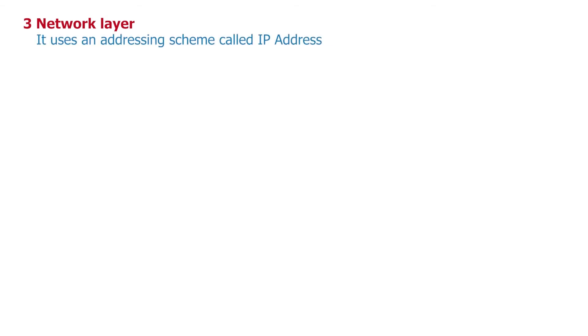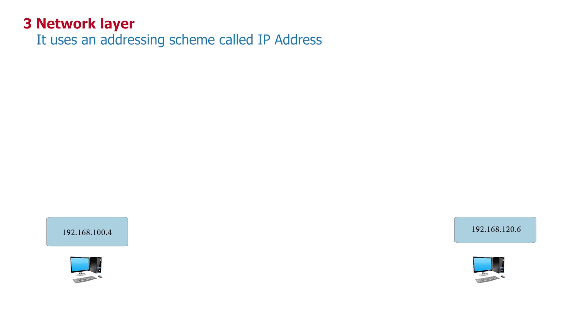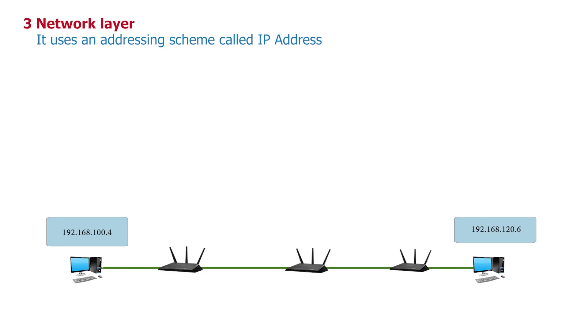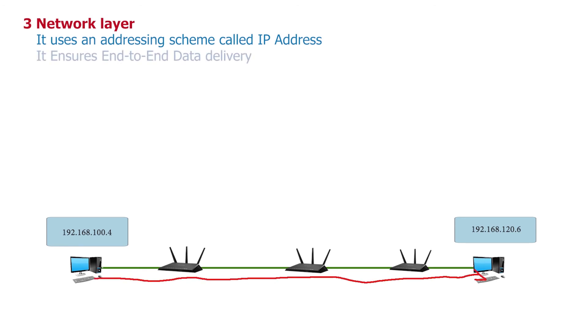When data needs to be sent across different networks, this brings us to layer 3 of the OSI model, called the network layer. It uses an addressing scheme called IP address. In computer networks, every host is identified by an IP address. In most cases, data must travel through multiple hops before it reaches its final destination on a different network or the internet. The network layer exists to ensure safe delivery of packets from one end to the other — this is called end-to-end data delivery. The device that facilitates this is called a router, and a router is considered a layer 3 device.